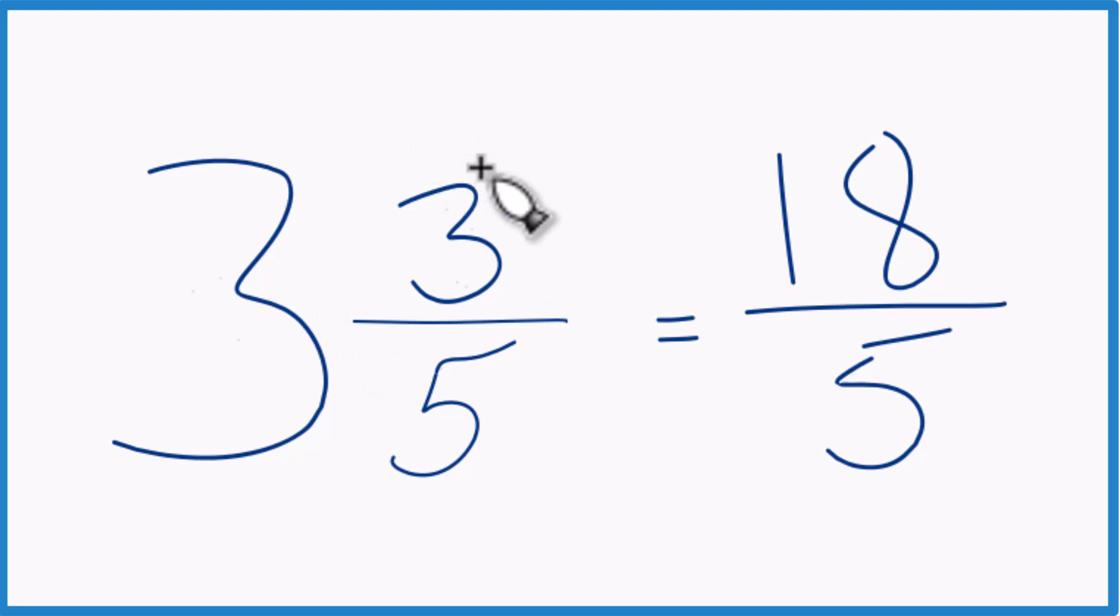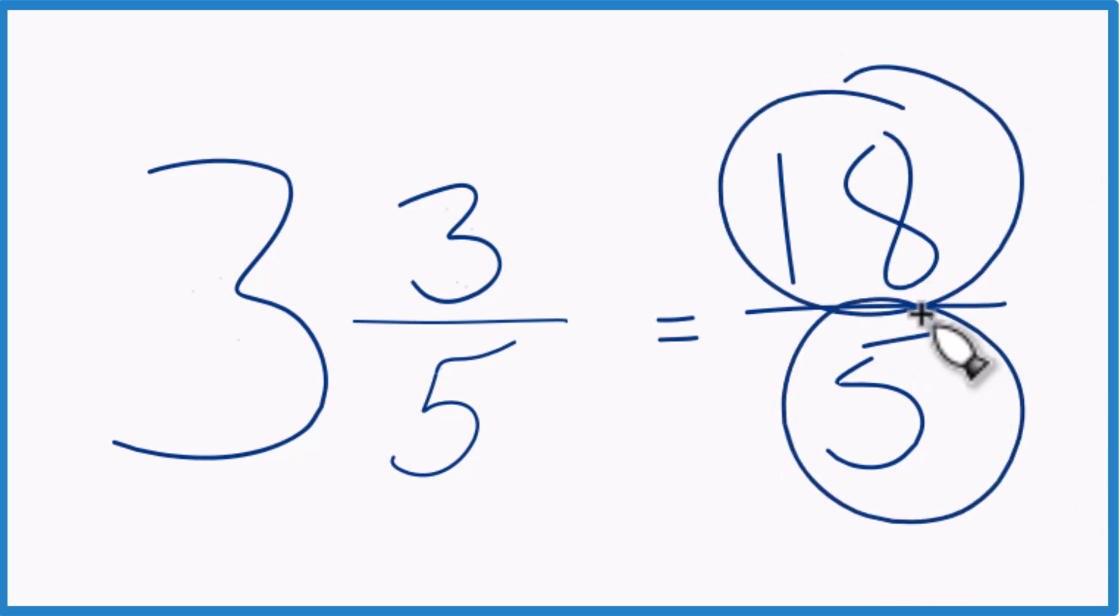So the mixed number, 3 and 3 fifths, equals the improper fraction, 18 fifths. It's improper because 18, that's larger than 5. Let's do that again.